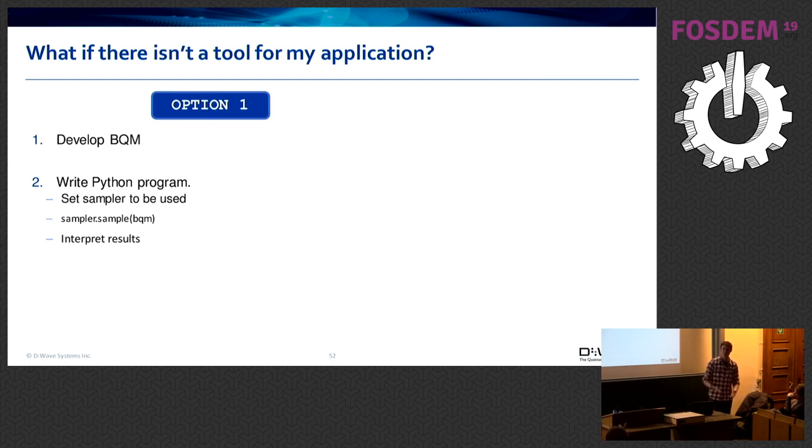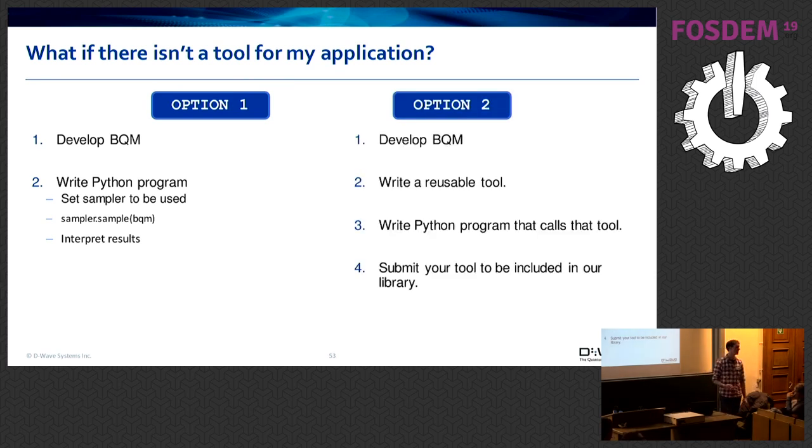And a reasonable question is, what if there isn't a tool for my application? So as I said, we have some graph theory tools and we have some constraint satisfaction problem tools. The thing that you can do is you can represent most problems as a BQM. So you could just develop that BQM yourself and then use the sampler directly. Or what I would much prefer is you can develop the BQM, you could write a reusable tool, and then you could make it as a pull request or maintain it yourself. And therefore you can expand the set of problems that people are asking questions about. So I don't think I need to describe what a pull request is to this group, but anybody can make a pull request to GitHub. We're very active on GitHub, we're very active in merging pull requests.